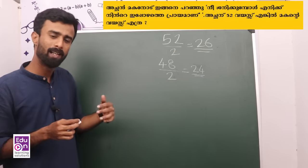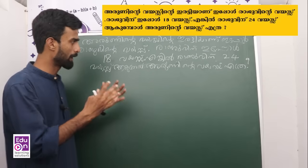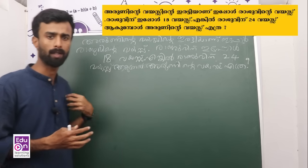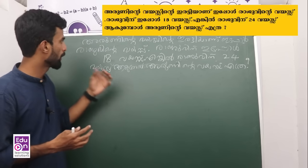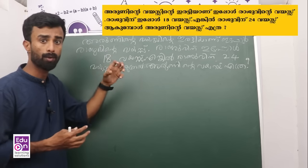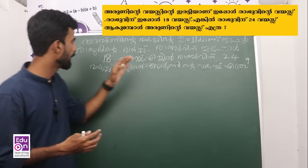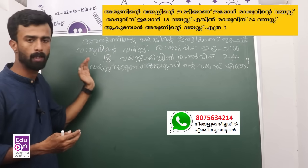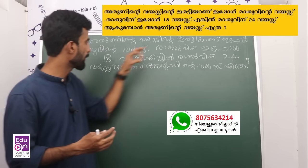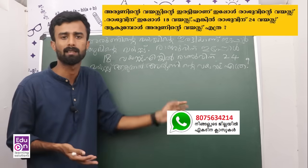Let's go to the next question. If you have any questions, you can answer. The first question involves Raju. Raju has 18 and 24. That is the second question.